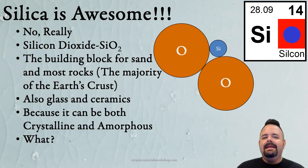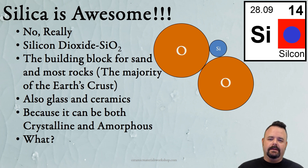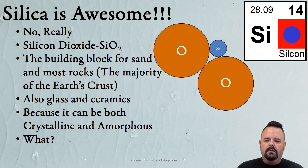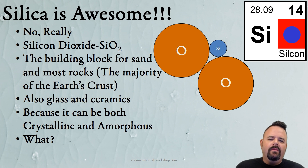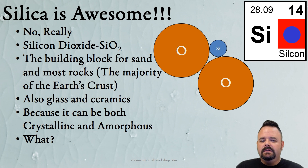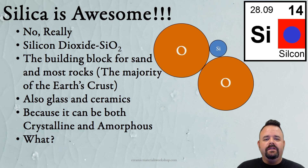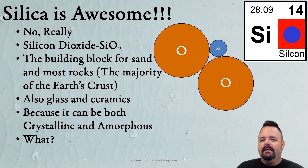Silica is awesome — it's amazing, it's so cool. Silicon is the individual element, but we bond it with two oxygens to form a new molecule called silica, SiO₂. When we put that little 'a' on the end, it means we're bonding it with oxygen. So silicon bonds with two oxygens to form silica.